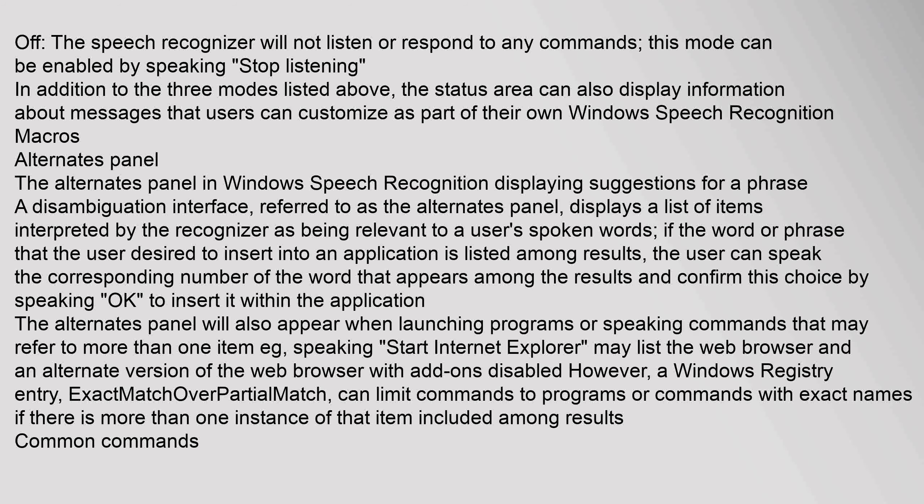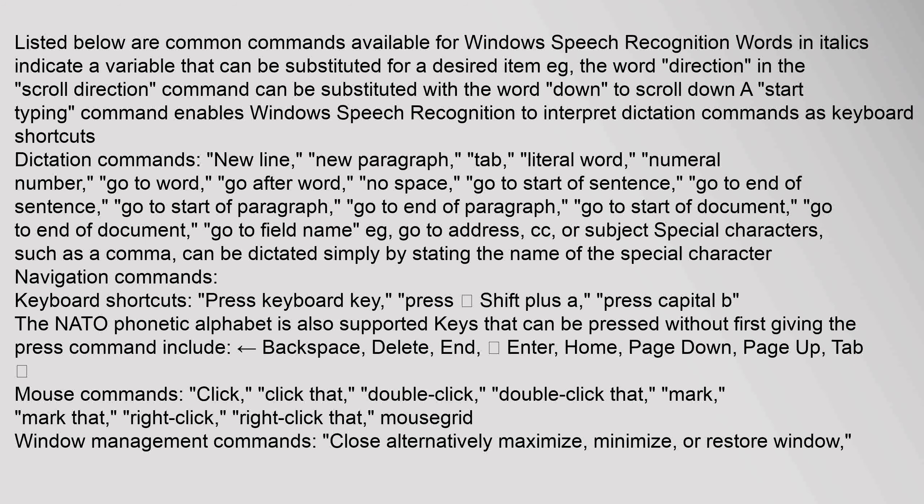Listed below are common commands available for Windows Speech Recognition. Words in italics indicate a variable that can be substituted, e.g., the word 'direction' in the 'scroll direction' command can be substituted with 'down' to scroll down. A 'start typing' command enables Windows Speech Recognition to interpret dictation commands as keyboard shortcuts. Dictation commands include: new line, new paragraph, tab, literal word, numeral number, go to word, go after word, no space, go to start/end of sentence, go to start/end of paragraph, go to start/end of document, and go to field name. Special characters such as a comma can be dictated simply by stating the name of the special character.